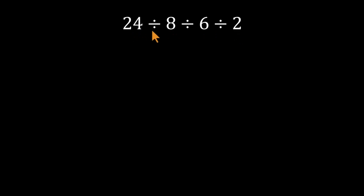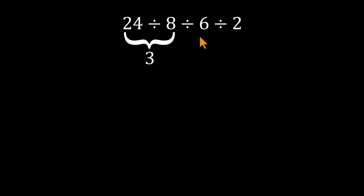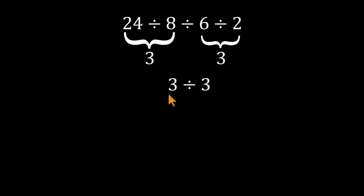Here's how most people get it wrong. They take 24 divided by 8 — that gives 3. Then they take 6 divided by 2 — that gives 3 again. Finally, they do 3 divided by 3 and say the answer is 1. Everything feels perfect, except it's not correct.